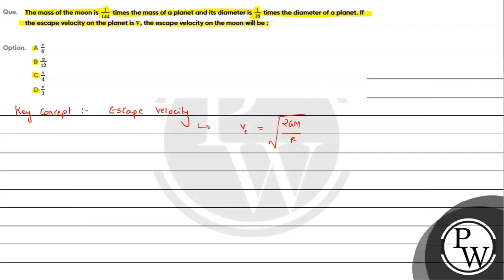Now the situation given is we have to compare a planet with a moon. We are given the mass of moon is 1 by 144 times mass of the planet. And the moon's diameter is 1 by 16 times diameter of planet.